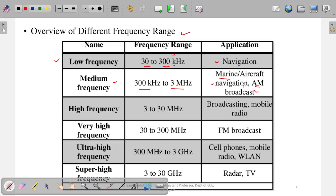Nowadays AM broadcast is not commonly used, but previously radio was the only mode of getting information or news. AM broadcast was the main medium, and it uses this medium frequency range.